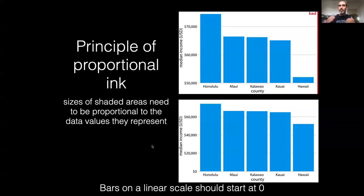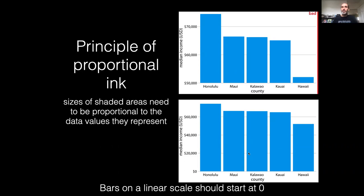By contrast, the lower visualization is not obscuring that information. The amount of area for each of those bars really represents the amount of — in this case — income in those areas.